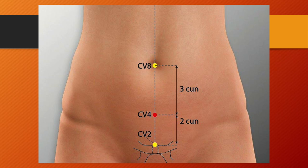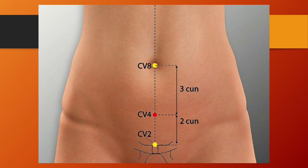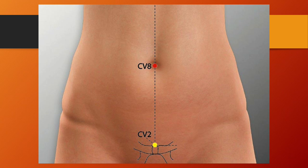Front-mu points can be used to treat diseases of the affected zangfu organ and those of yang meridians and collaterals. They treat diseases of the six fu organs and diseases of yang meridians. An adverse reaction when the front-mu point is pressed can help make a diagnosis. REN8, Shenque or spirit gateway, is located in the middle of the abdomen, in the center of the umbilicus. Functions: rescues yang collapse, resuscitates, warms yang, regulates the intestines. Needling: indirect moxibustion with moxa cones or moxibustion on some type of material like salt or ginger.